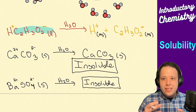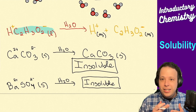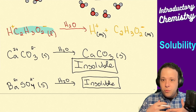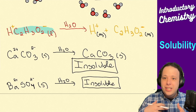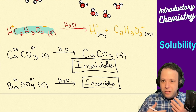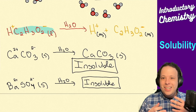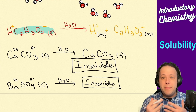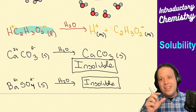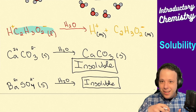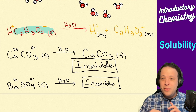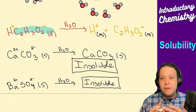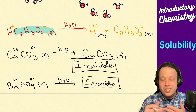An interesting fact: barium sulfate is actually one of the contrast agents commonly used in X-rays to boost imaging. It's used because it's insoluble — it coats parts of the body so that it contrasts your bones and makes them more visible. You also don't want barium dissolving in the body because barium is extremely toxic in ionic form. Being insoluble, it's safe to ingest in small amounts for medical imaging.